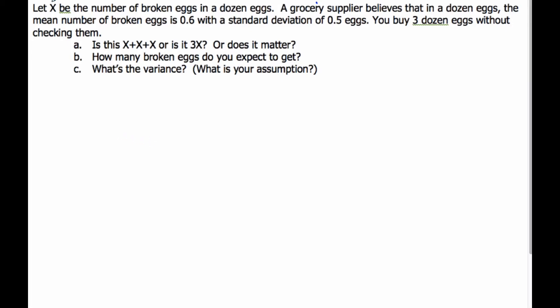All right, in this example we're going to let X be the random variable of the number of broken eggs in a dozen. So the grocery supplier believes that in a dozen eggs, the mean number of broken eggs is 0.6, with a standard deviation of 0.5 eggs. I'm going to buy three dozen eggs without checking them.